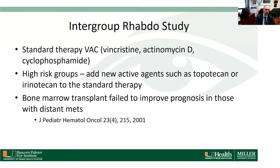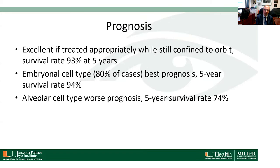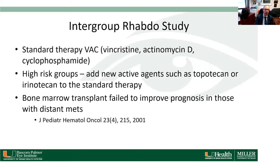The Intergroup Rhabdomyosarcoma Study Group defines standard therapy as VAC — vincristine, actinomycin, and cyclophosphamide. High-risk groups receive the newer agents discussed. Bone marrow transplant has failed to improve prognosis in patients with distant metastases.